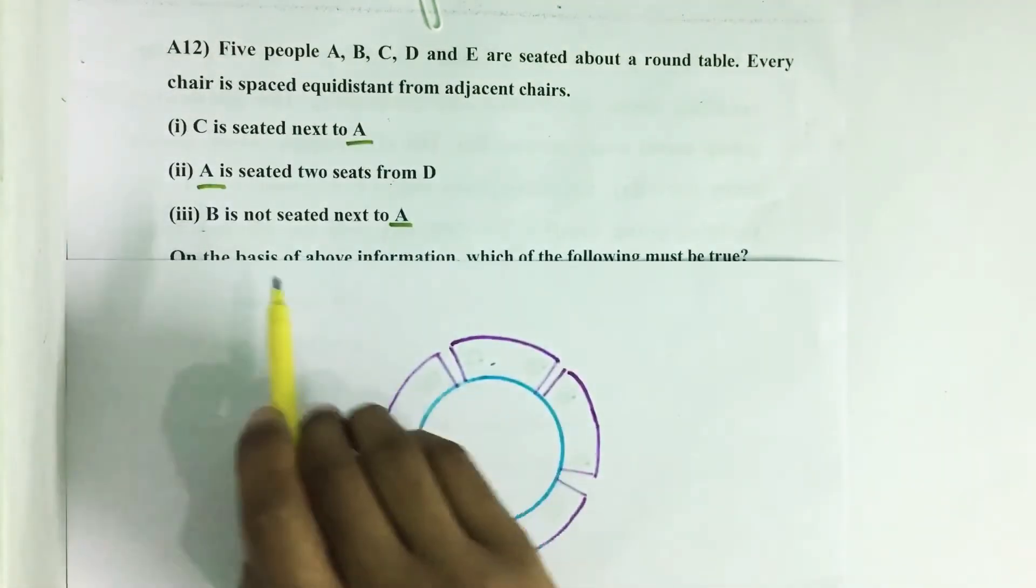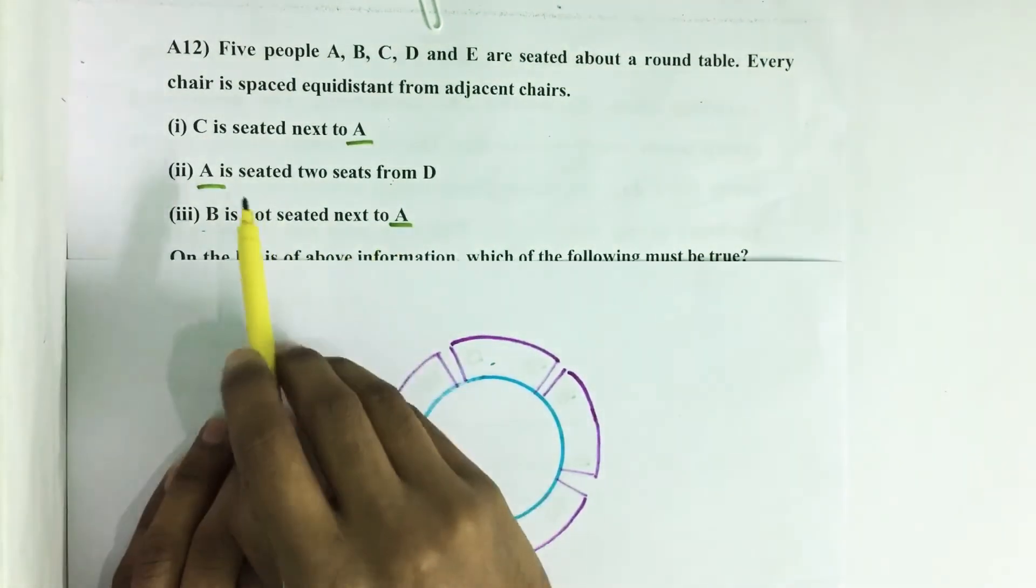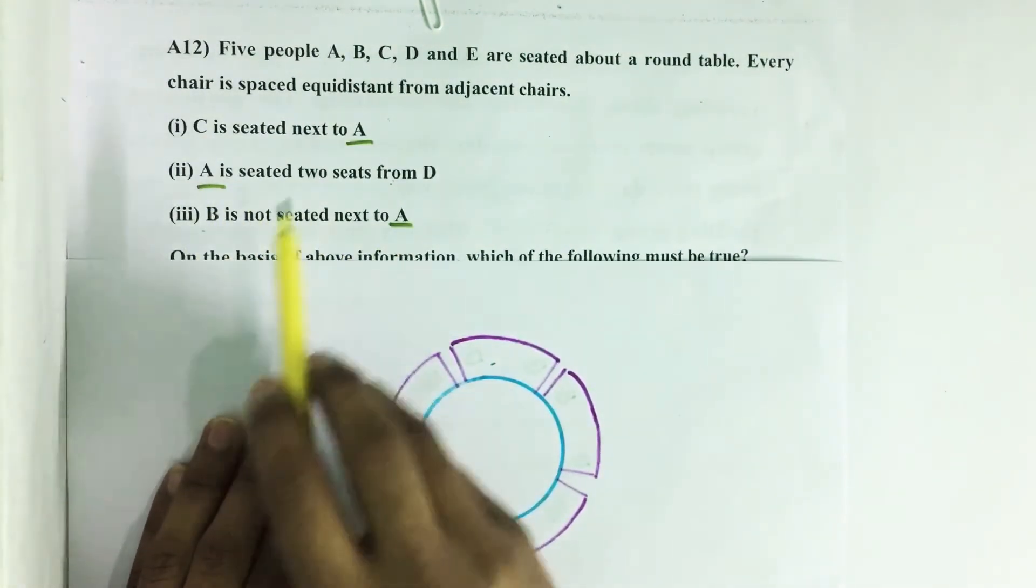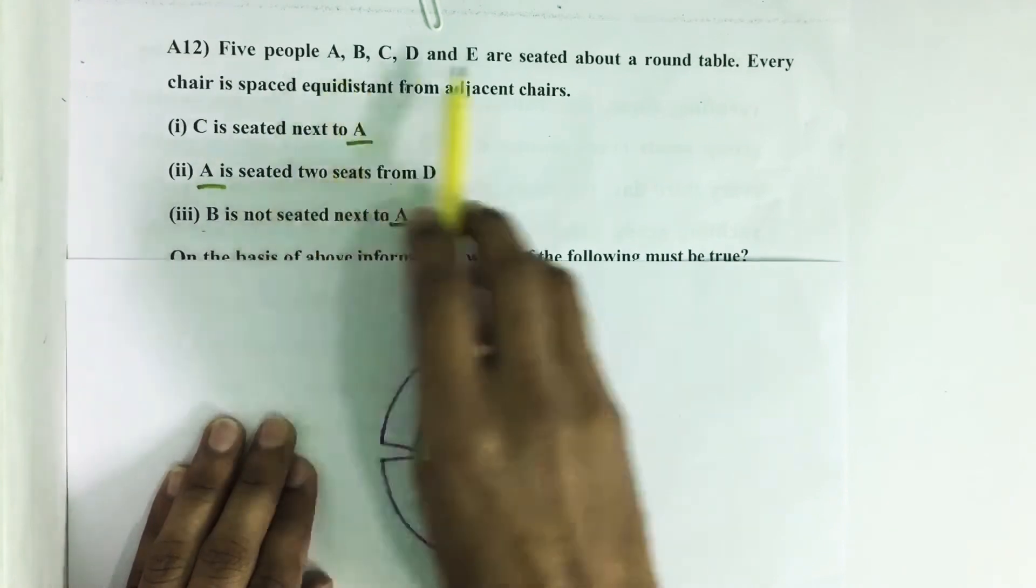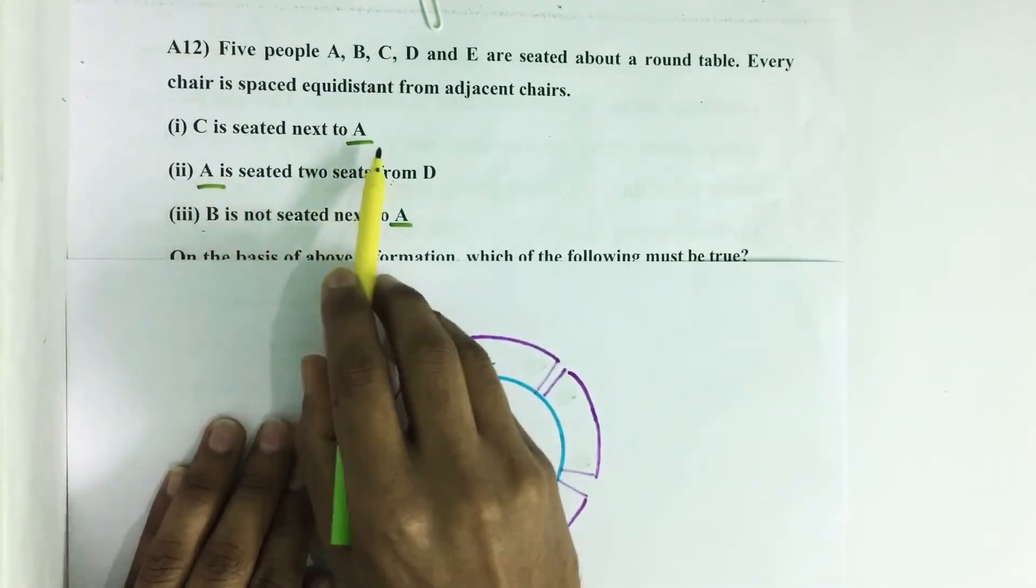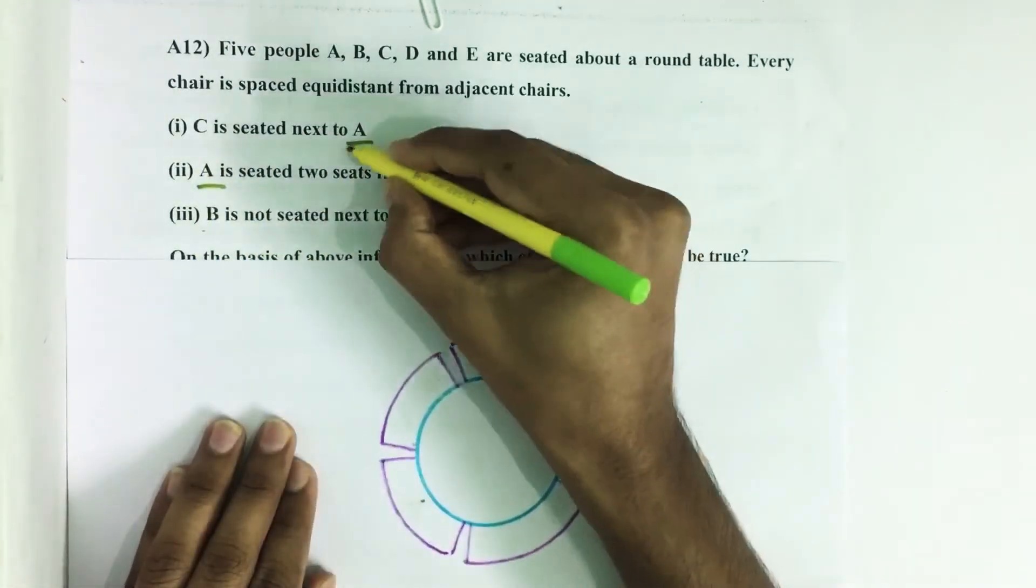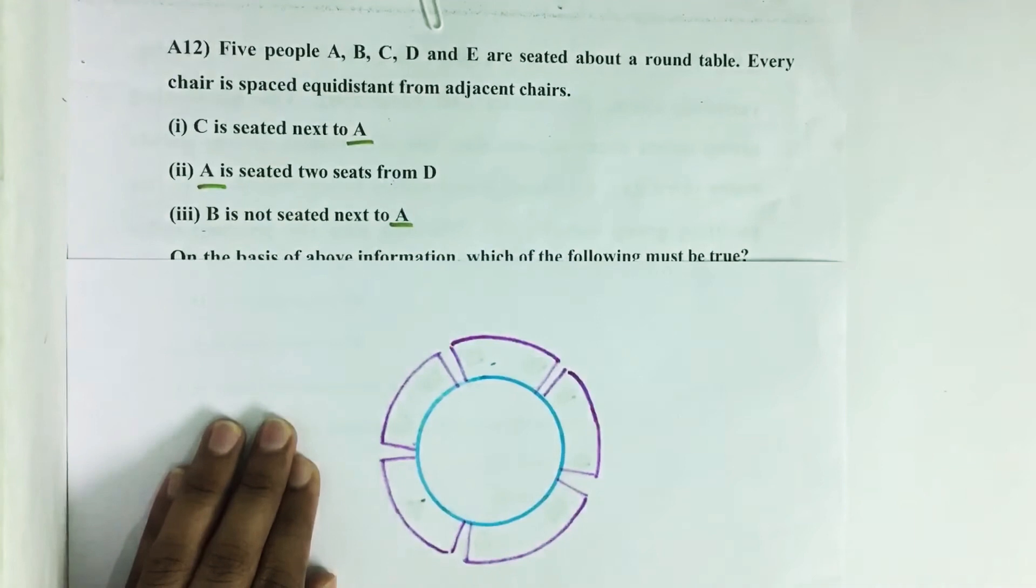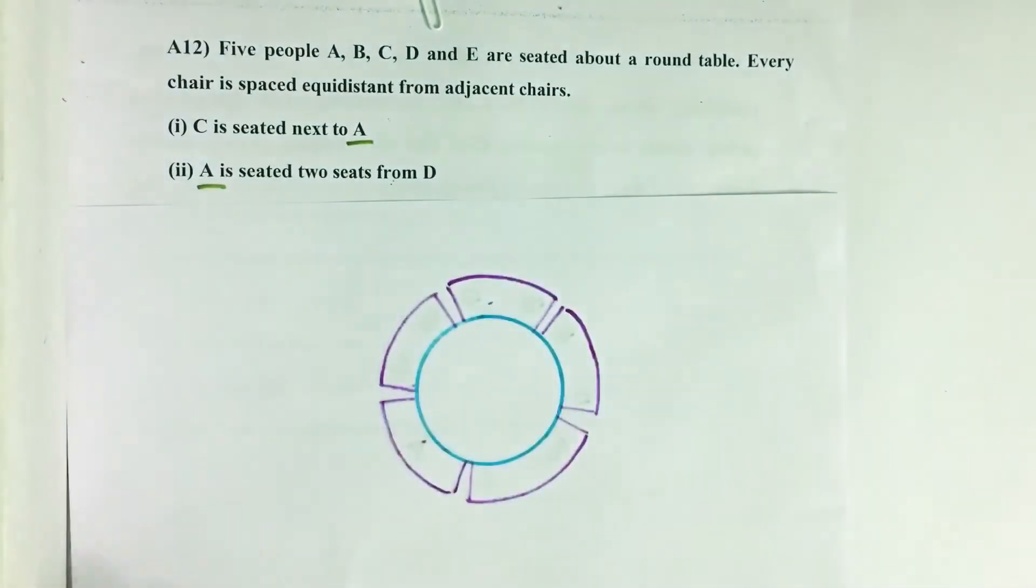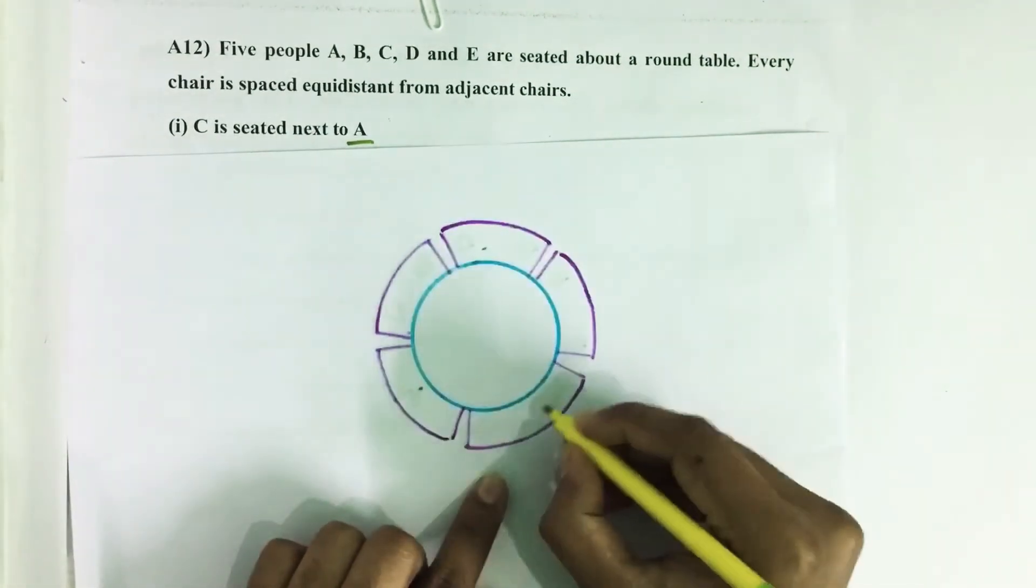They are given three statements here showing the seating arrangement of all these five people. We can see all these statements are given based on A's seating arrangement. So for this particular question, we are fixing the seat of A in any of these.